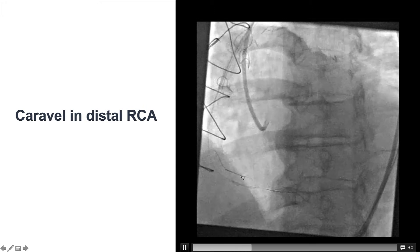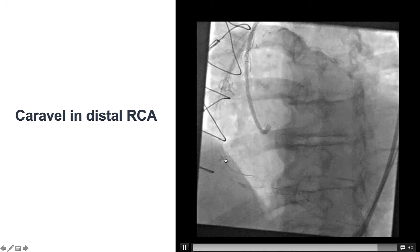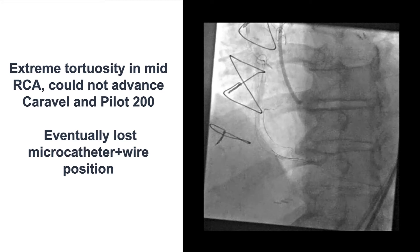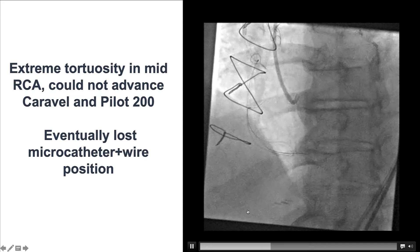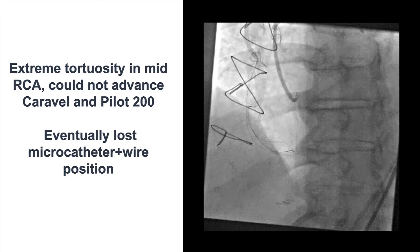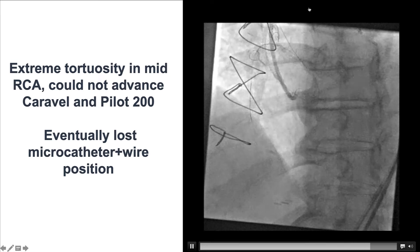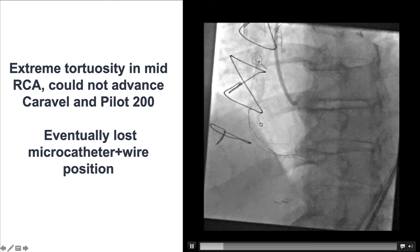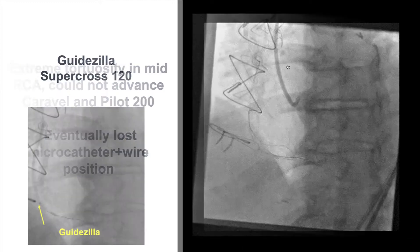We advanced the Caraval microcatheter to the distal right coronary artery and attempted to make retrograde progress; however, it was extremely challenging. During attempts, there was a loss of both the guide wire and the microcatheter position — the guide was no longer seated properly and everything popped out. The lesson here is that sometimes we become too focused on wire manipulation and forget to monitor the guide catheter, which can result in loss of the entire equipment position.